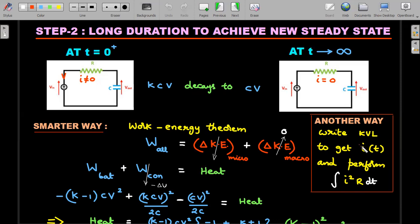An alternative way to solve this problem which I'm not exploring here is to write the Kirchhoff's voltage loop law and integrate to get the value of that current and then perform the integration of I squared R dt from zero to infinity time and you will be able to get the expression.